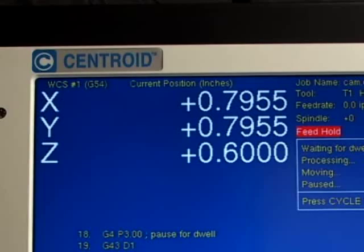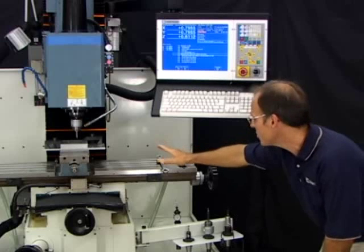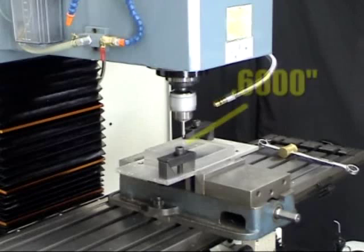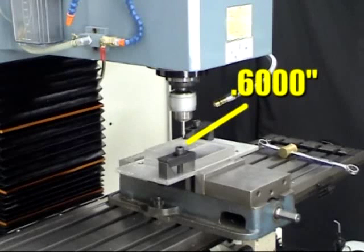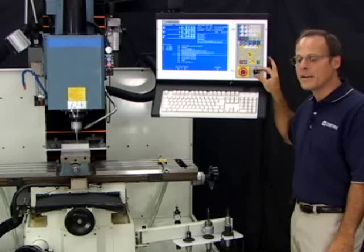Now the DRO says .6 inches. I'm going to do another visual check, make sure that it looks like about .6 inches above the part. It sure does. We're looking good. So I'm going to hit cycle start to continue to release the feed hold. And I'm going to turn up the feed rate.